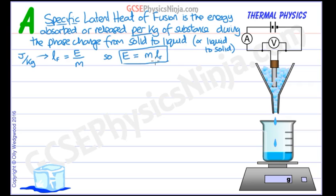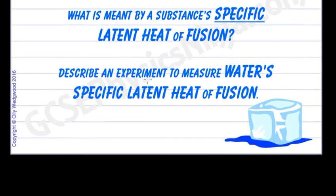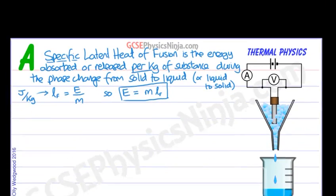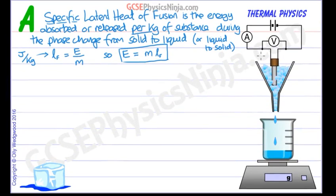So onto the second part of the question, which is asking us to describe an experiment to measure water's specific latent heat of fusion. So here's the setup. We're going to heat up some ice. Now this ice is already at zero degrees Celsius, so it's at its melting point. And that's important.